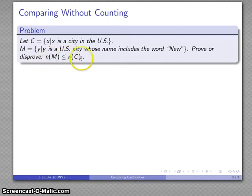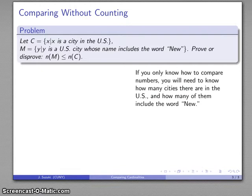Now if I persist in thinking about cardinality of M, cardinality of C as the number of things in these two sets, I have to know the number of cities in the US. And then I also have to know the number of cities in the US whose name includes the word new. So I can go through an atlas and count the number of cities in the US and then I can count the number of cities whose names include the word new and a couple hours later I'll be able to prove or disprove this statement.